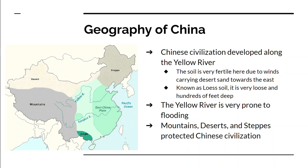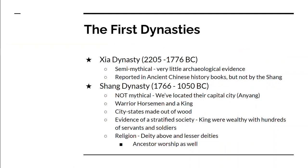It floods often and it's dangerous, and the river frequently changes course because of the floods. But it's still very good, fertile soil to grow in, so this is going to become the cradle of Chinese civilization. There are mountains to the west, jungle to the south, desert to the north and west, and steppes to the north and east, so China is fairly well protected from outsiders, which allows Chinese culture to develop.